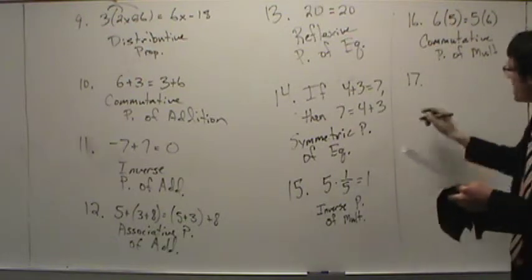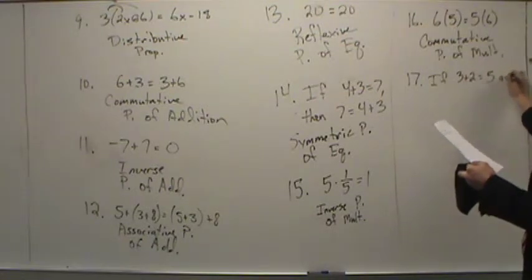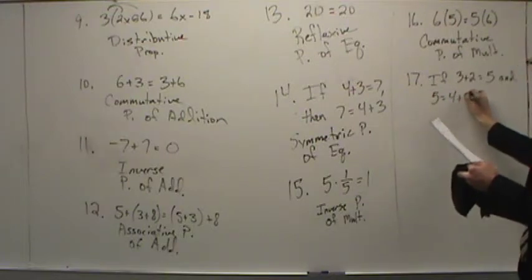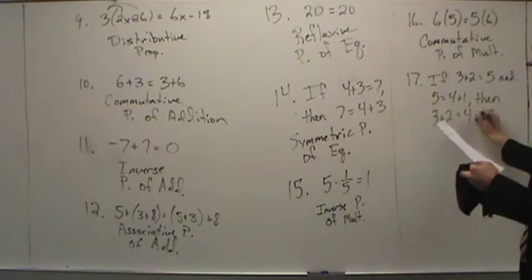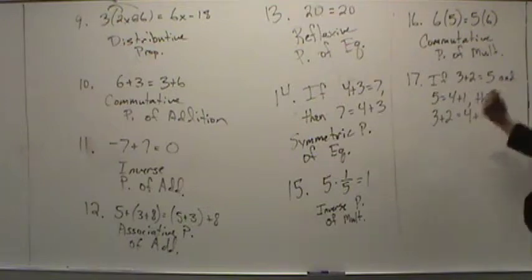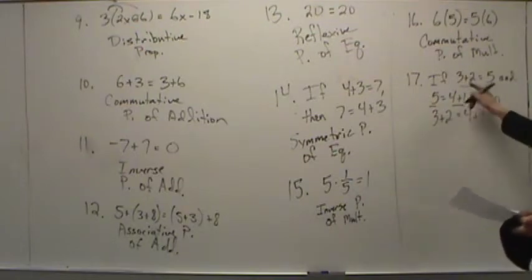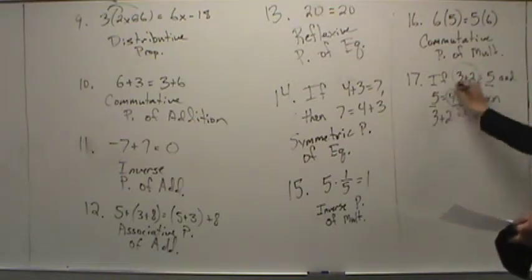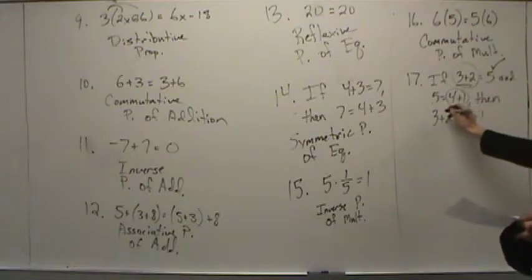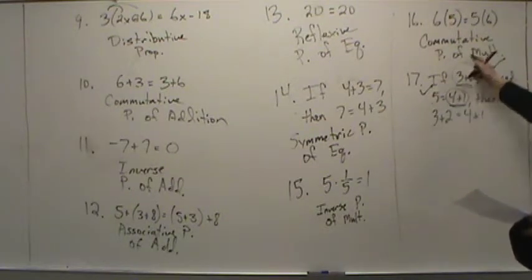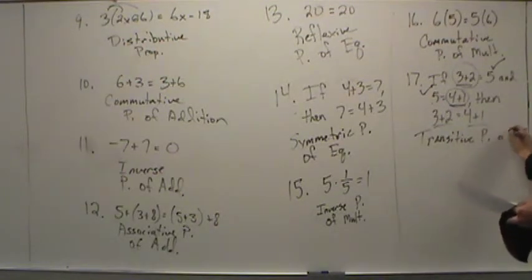Number seventeen: if three plus two equals five and five equals four plus one, then three plus two equals four plus one. If-then gives a clue that you're looking at a property of equality. If the first is the second, and the second is the third, then the first must be the third. This is the transitive property of equality.